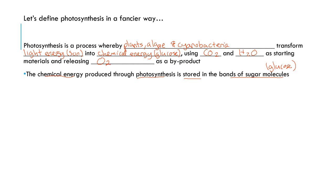Photosynthesis is a process whereby plants, algae, and cyanobacteria transform light energy into chemical energy like glucose, using carbon dioxide and water, and releasing oxygen (which is what you breathe) as a byproduct.